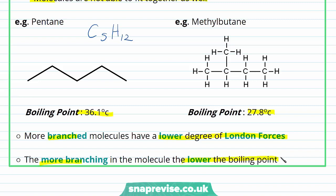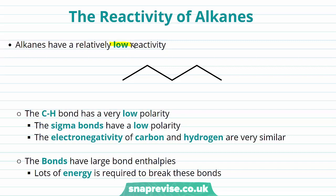So we can see that it is not only the carbon chain length but also the degree of branching that affects the boiling point of our alkanes. Our alkanes have a relatively low reactivity. The carbon-hydrogen bond within our alkane has a low polarity — the sigma bonds have a low polarity — because the electronegativity values of carbon and hydrogen are so similar. The bonds within our alkanes have large bond enthalpies; they require lots of energy to break them, meaning that our alkanes are relatively unreactive.